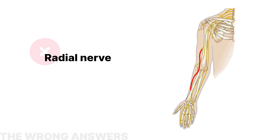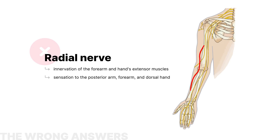The radial nerve is primarily responsible for the innervation of the forearm and hand's extensor muscles. It provides sensation to the posterior arm, forearm, and dorsal hand, and isn't typically implicated in elbow flexion injuries.